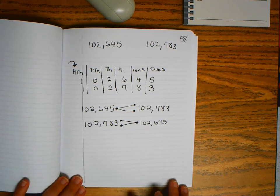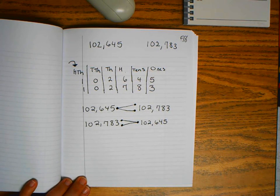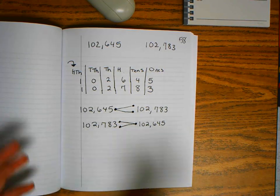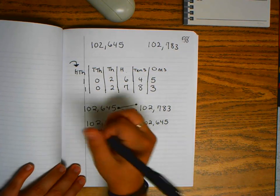You also will hear terms such as equal to, which means the numbers are the same, and then greatest to least and least to greatest.